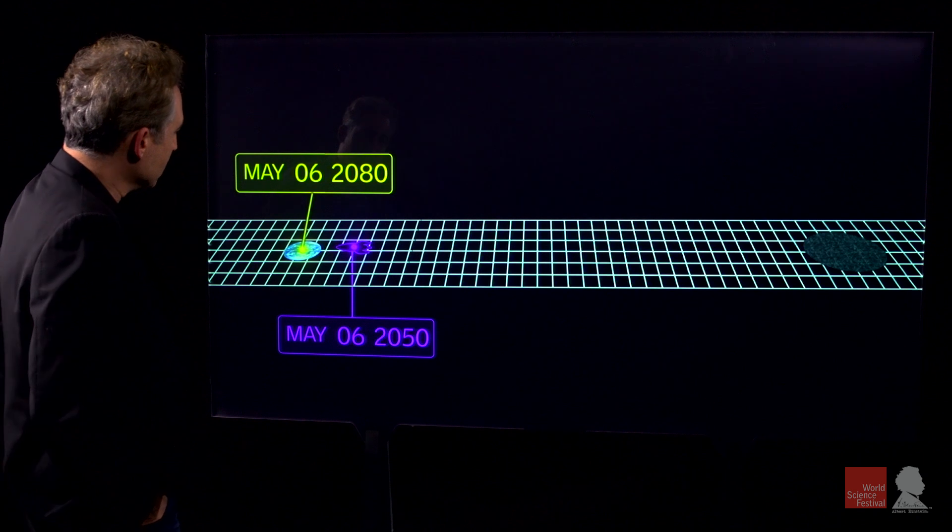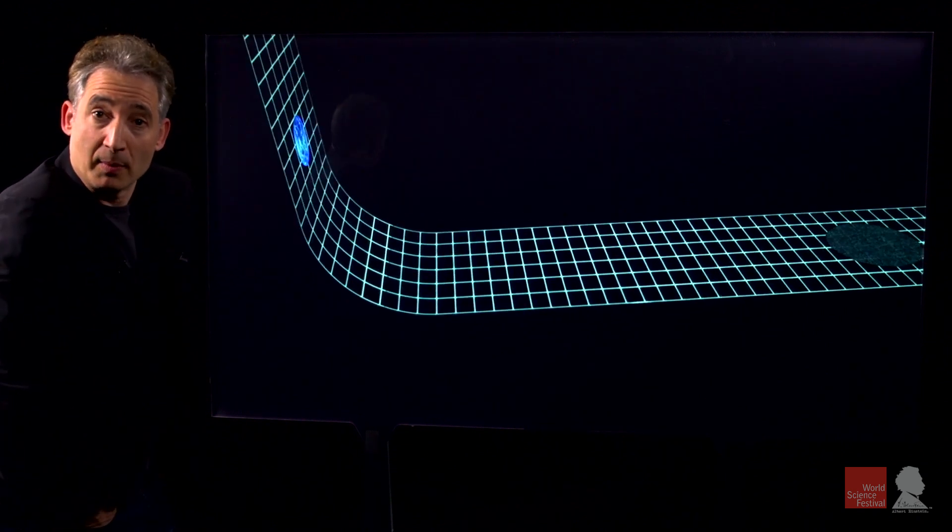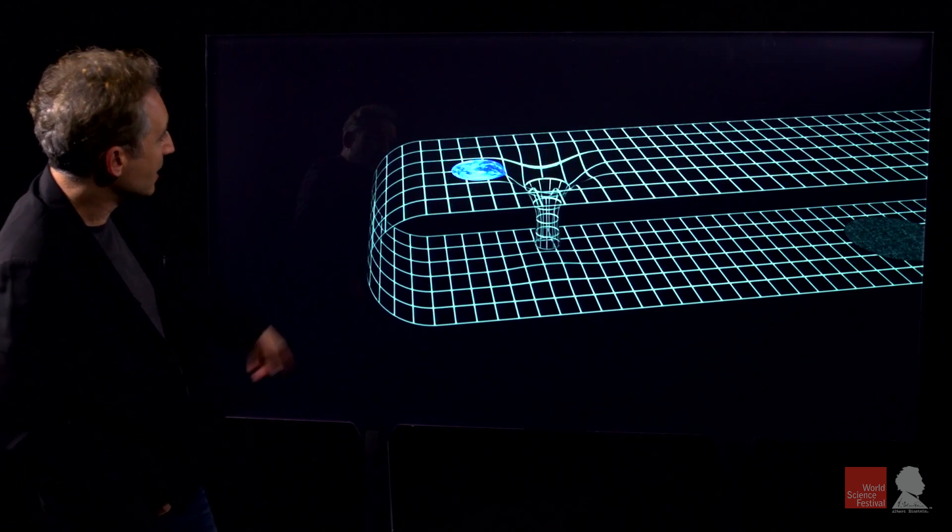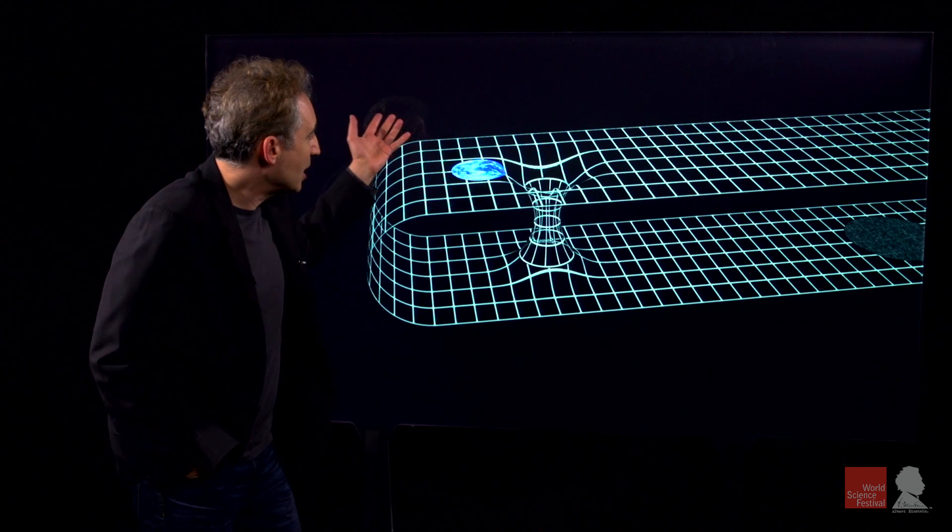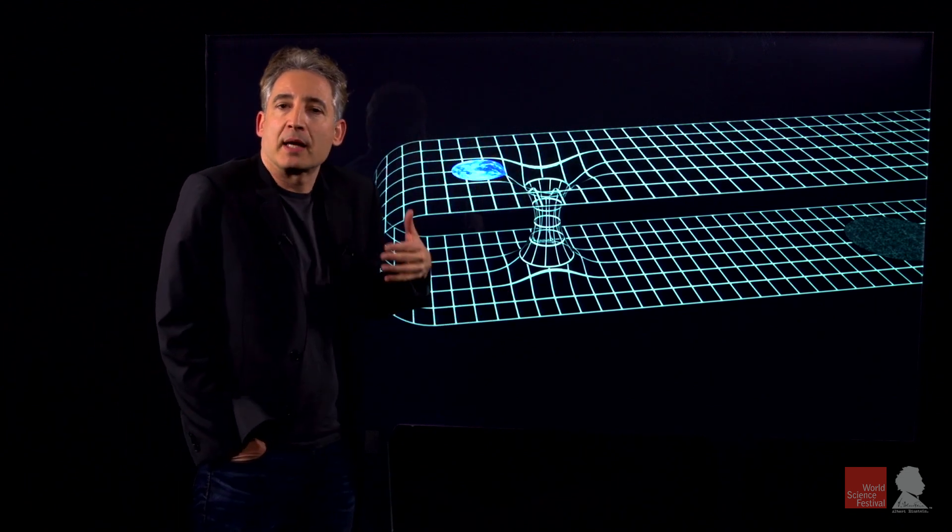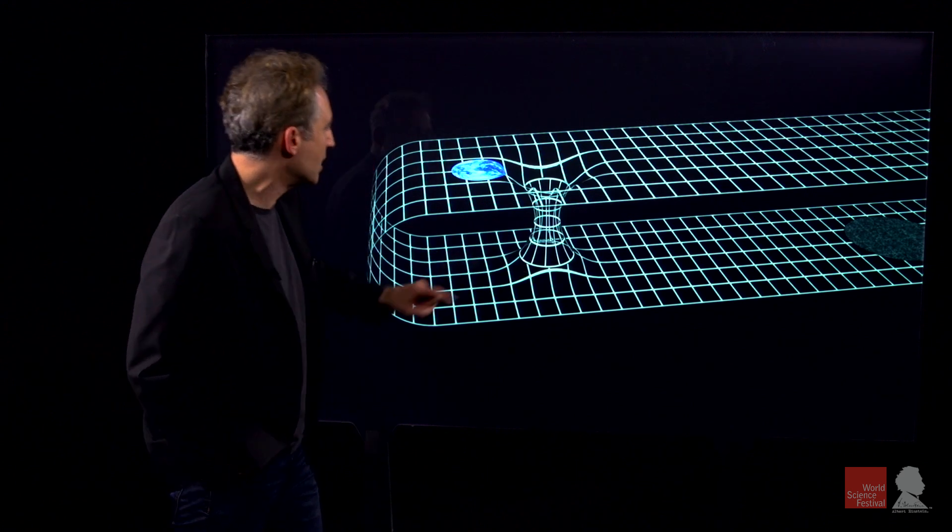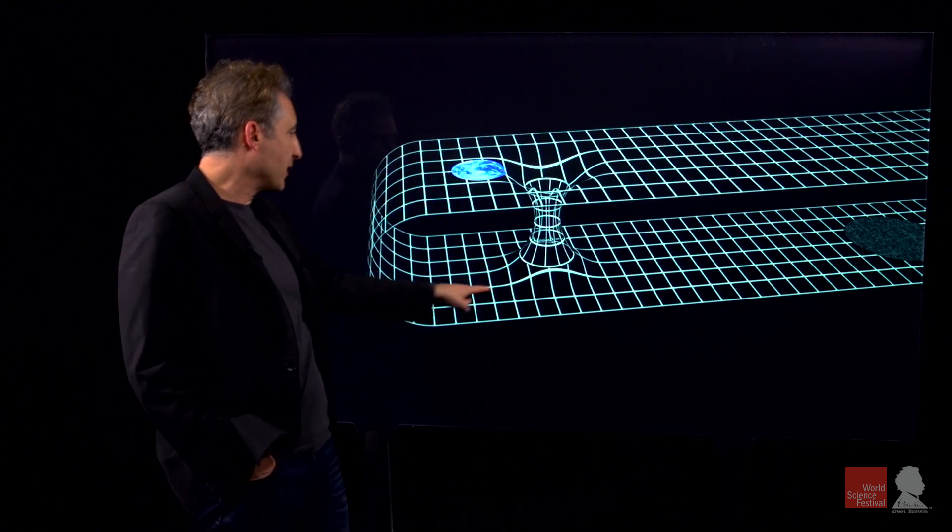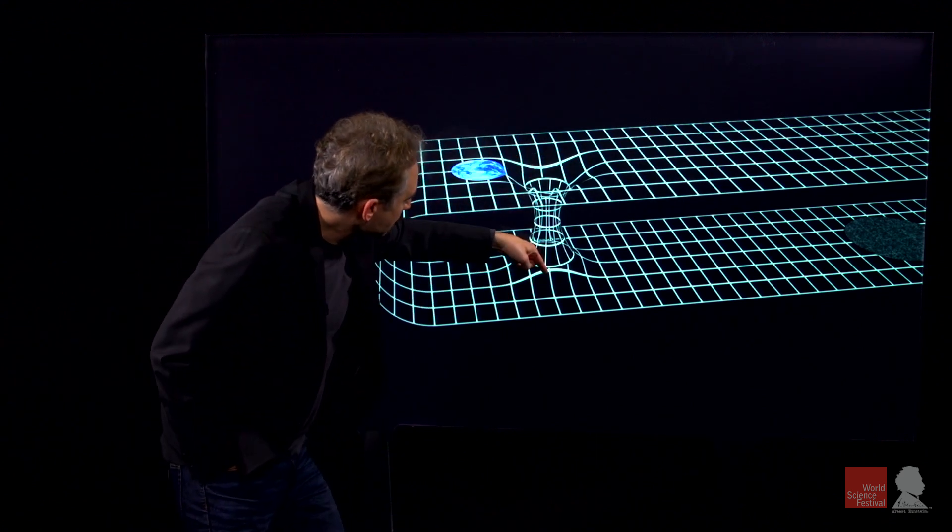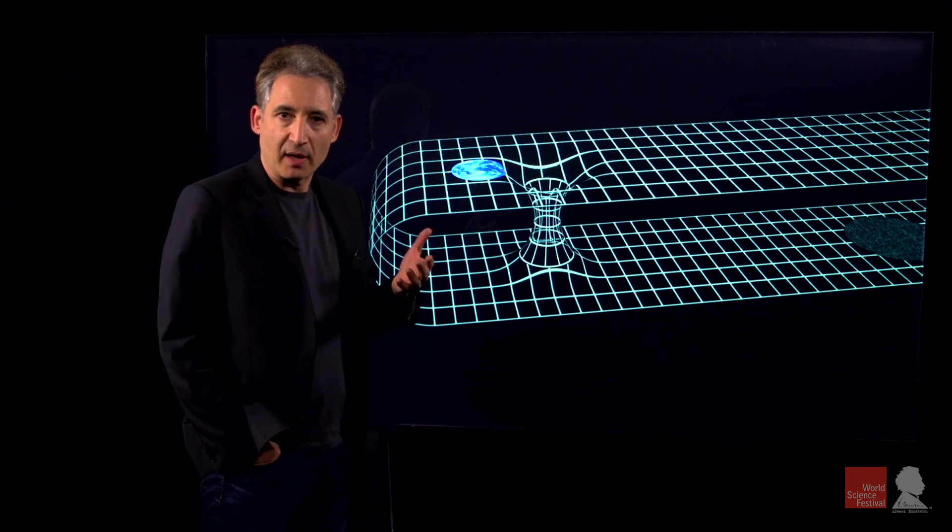It involves the idea of what's known as a wormhole. You may have encountered that in other settings. A wormhole is just a tunnel through space that acts like a shortcut. So if you want to go from this location to this location, you can go the long route on the outside, or you can go the short route through the wormhole itself.